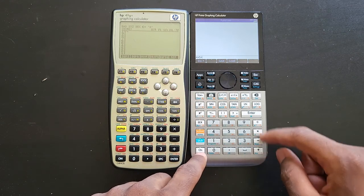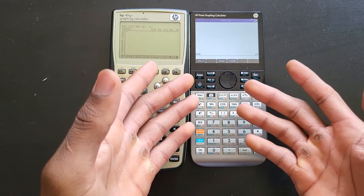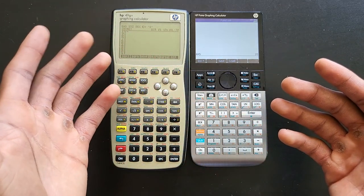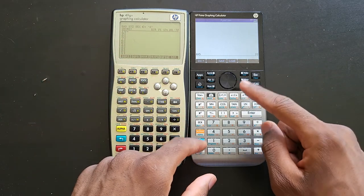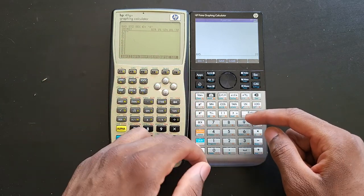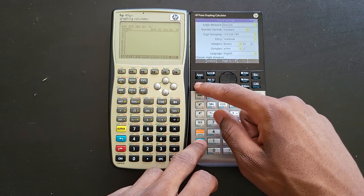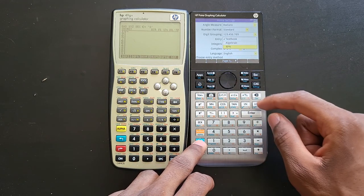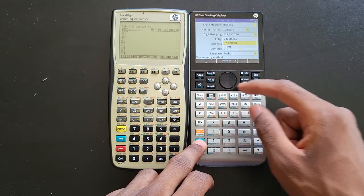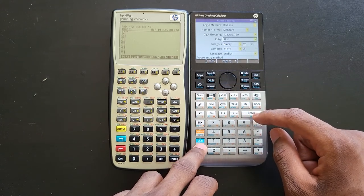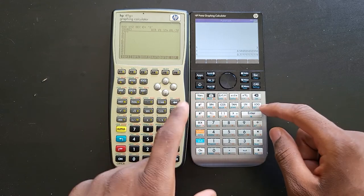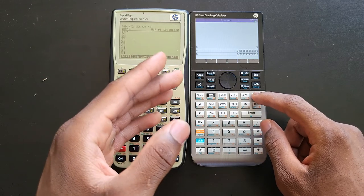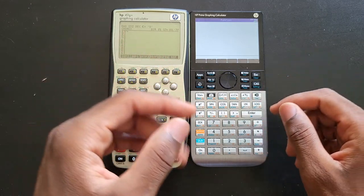If you want to do 4 times 5, which is 20, then this is how you would normally do it on pretty much any calculator you see today. RPN is slightly different. I can change my entry from textbook or algebraic to RPN. As you can see, my stack is completely different. I'm just gonna erase everything on my stack.